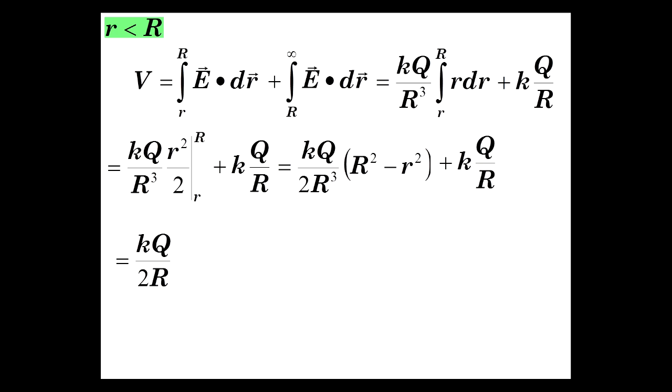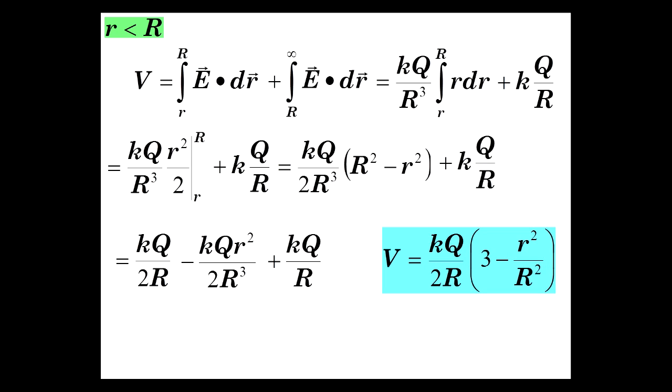And now we can write it as follows. This times R squared is KQ over 2R, and then this times negative r squared is this factor, plus KQ over big R. And we can bring terms together here a little bit and come up with our potential, which is KQ over 2R times 3 minus r squared over big R squared. So that was a fun exercise, and that is the method used to determine the potential from inside the sphere, the non-conducting sphere.